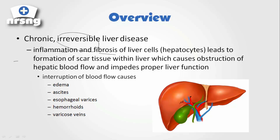Once we develop all the scar tissue, we start to block blood flow and develop scar tissue all over our liver, which impedes normal liver function. Interruption of blood flow can cause edema, ascites, esophageal varices, hemorrhoids, and varicose veins. It can cause a decrease in coagulation, alteration in blood sugar regulation, and it can lead to encephalopathy and so many other conditions because of what the liver actually does in our body.